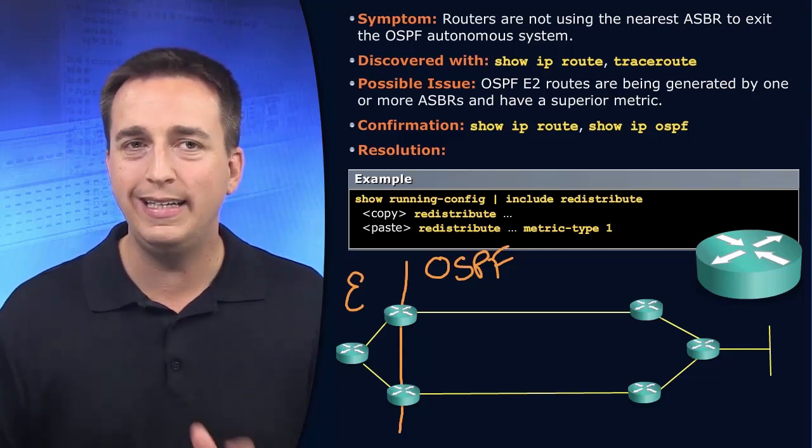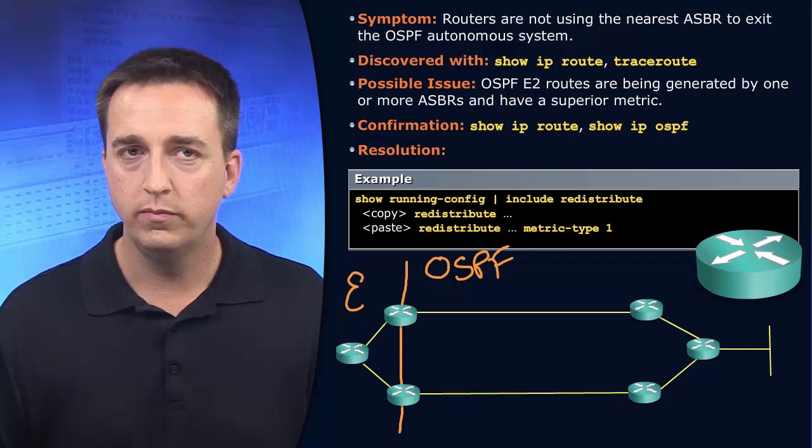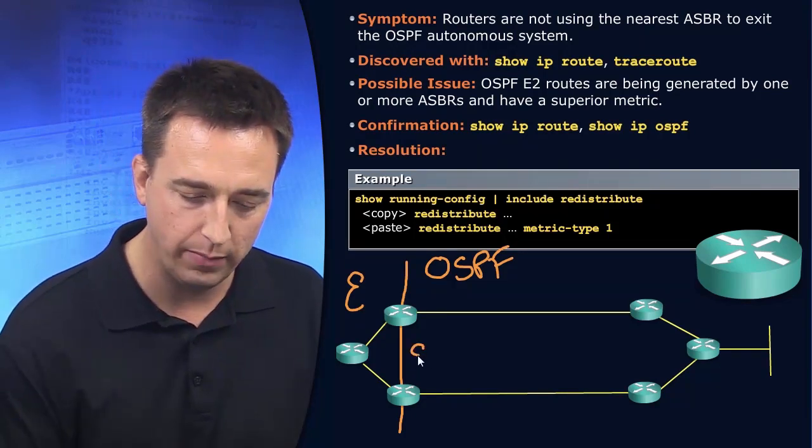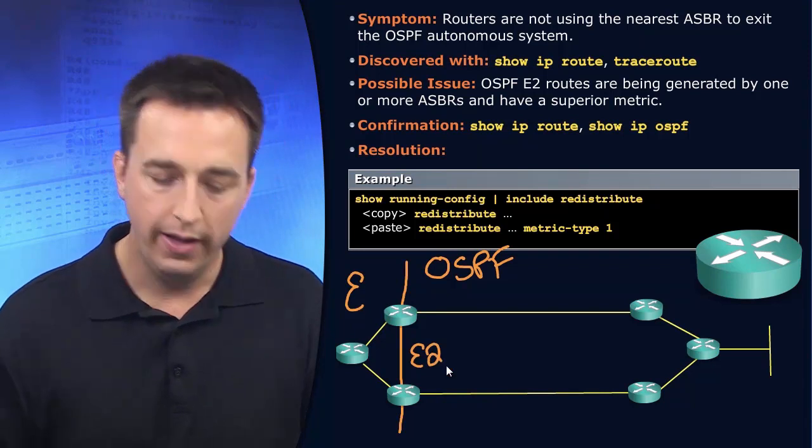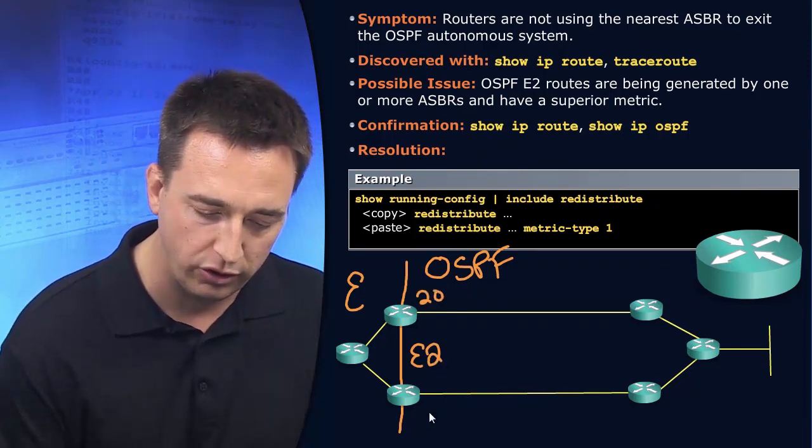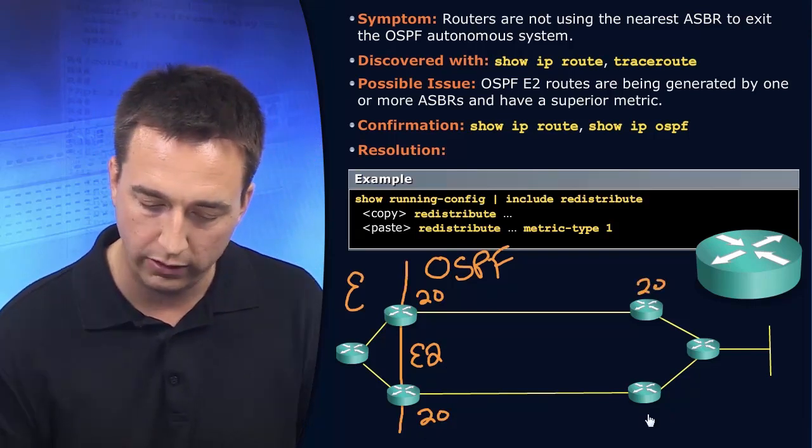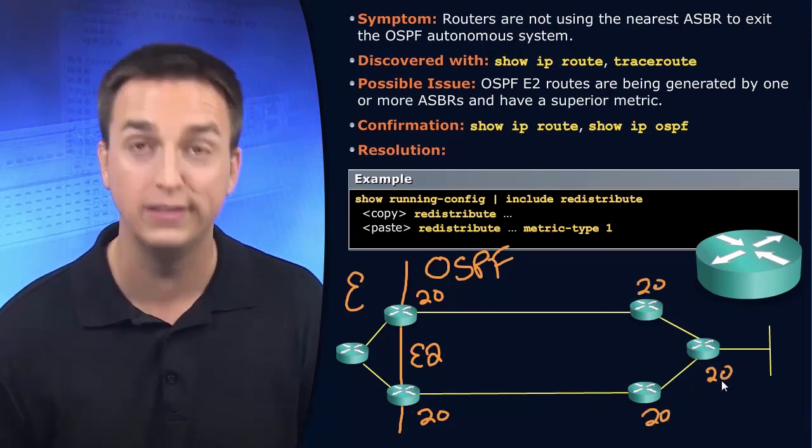If we're using E2 as the metric type, and let's say our metric at redistribution is the default of 20, then this router sees it as 20, this router sees it as 20, and this router sees it as 20.